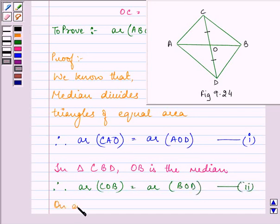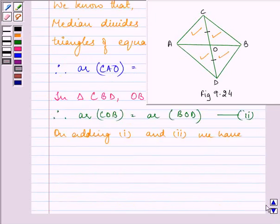Now, on adding 1 and 2, we have area of CAO plus COB. The triangle will be ABC and similarly, AOD plus BOD will give me triangle ABD.